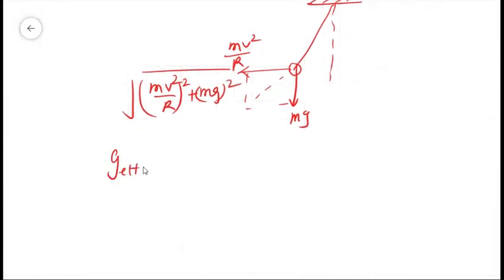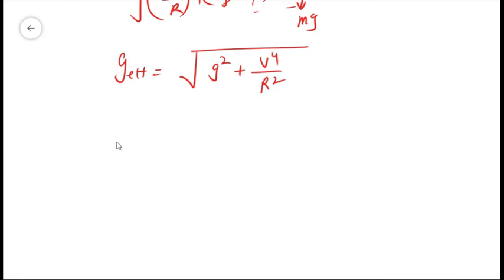The effective g, g_effective, will be √(g² + v⁴/r²). If we put this in the time period formula, we will get T = 2π√(L/√(g² + v⁴/r²)).